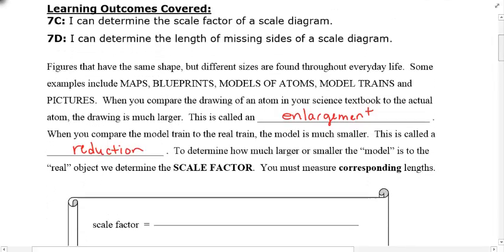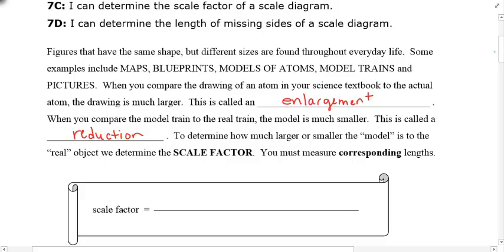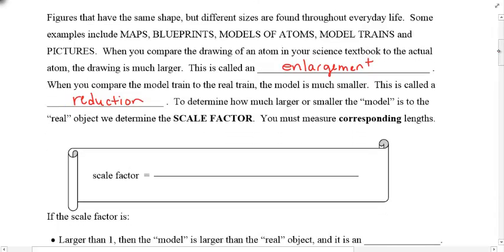And how do we determine how large or how small the model is to the real object? Well, we use something called the scale factor. And to calculate the scale factor, it is a ratio of two measurements, and you must measure the corresponding lengths. So the scale factor is this: it's the length of the object in your model or your diagram, and you're comparing that and dividing it by the length of the object in real life.